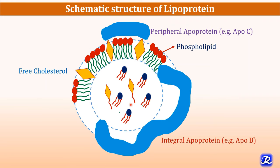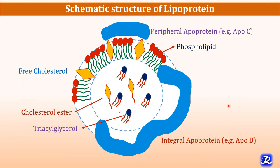The inner core is non-polar in nature and is made up of cholesterol ester and triacylglycerol. So in the structure of a lipoprotein, the inner core is mainly made up of non-polar lipids, surrounded by polar amphipathic molecules like phospholipids and free cholesterol.